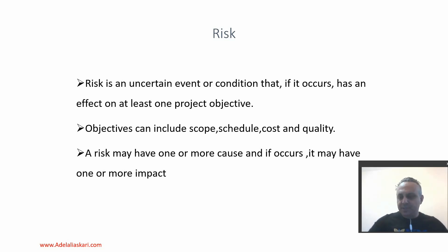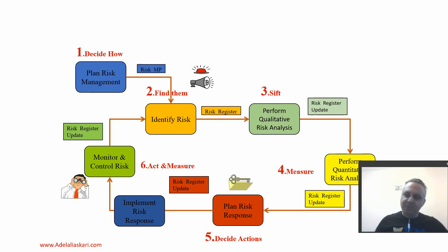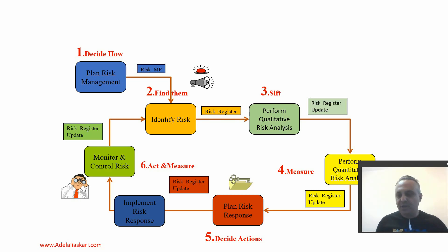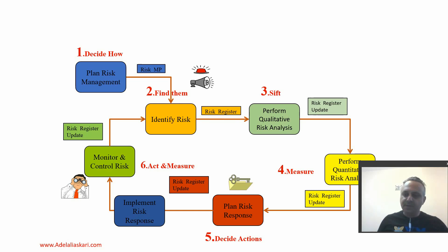We will start with creating the risk management document. In this document, we will write down the ways of risk identification and the definition of project probability and impacts, depending on the scale of the project. We may also document the regulations and related standards for risk identification and management in our organization, and define the reporting regulations and report templates.